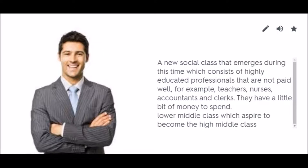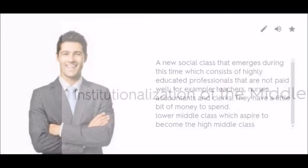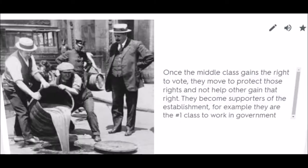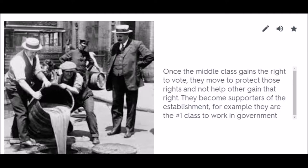Institutionalization of the Middle Class: Once the middle class gains the right to vote, they move to protect those rights and do not help others gain that right. They become supporters of the establishment. For example, they are the number one class to work in government.